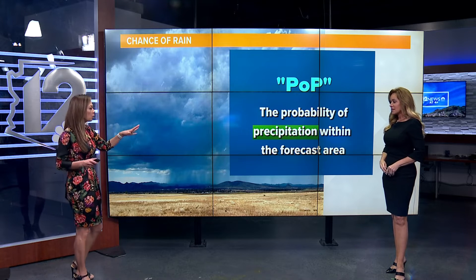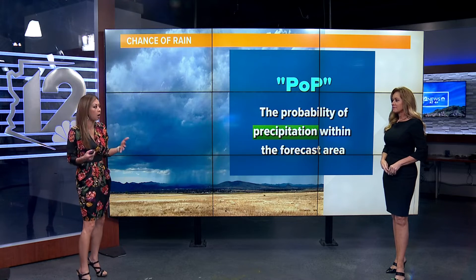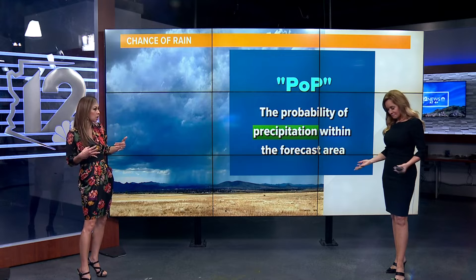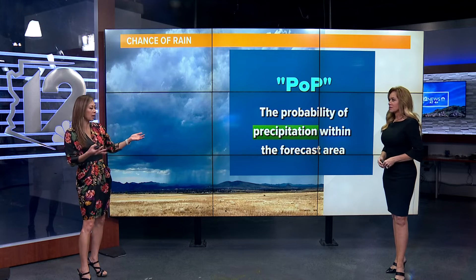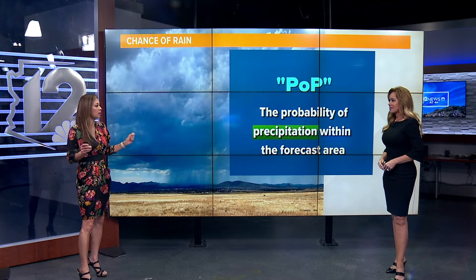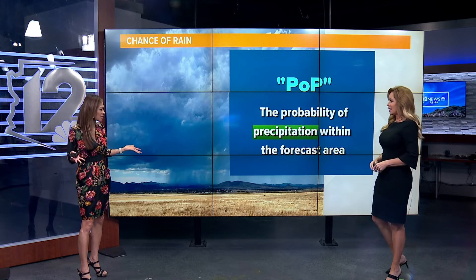So when you talk about measurable rain — for instance, I'll see rain at my house, but then you'll say later there was just trace amounts of rain. So why the difference?